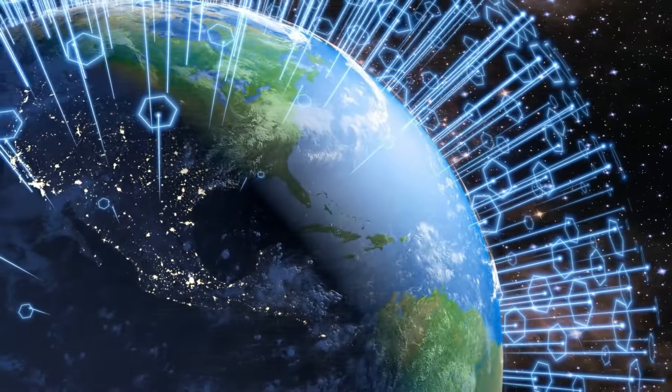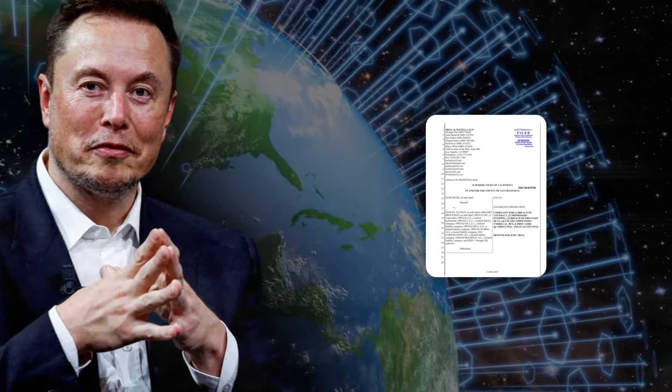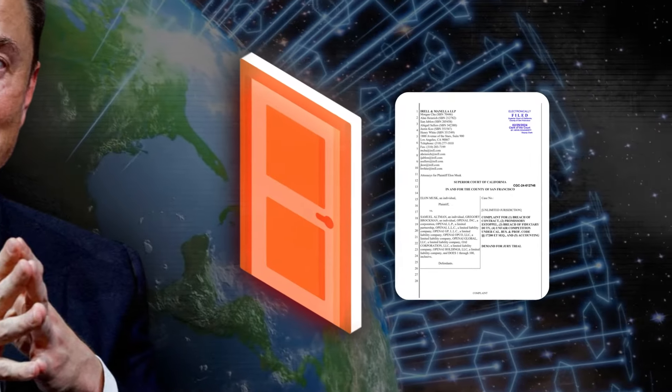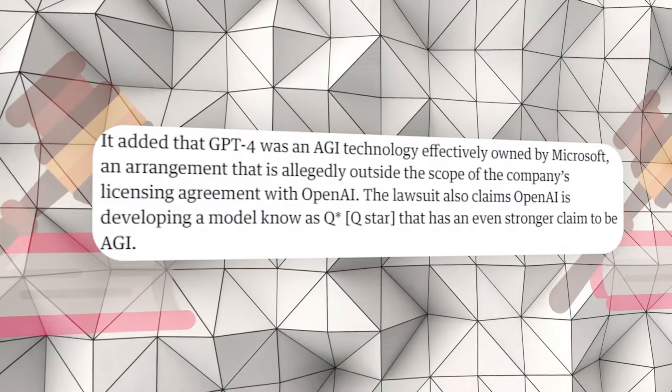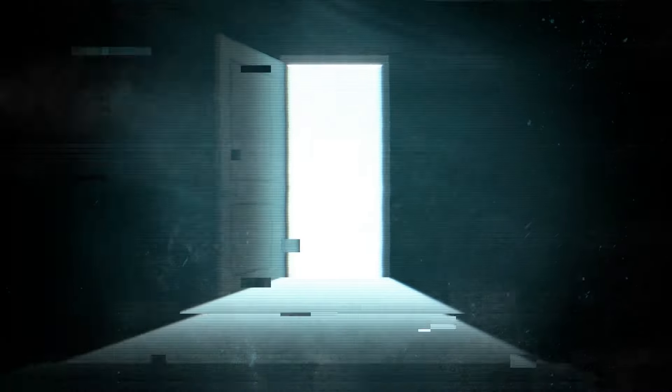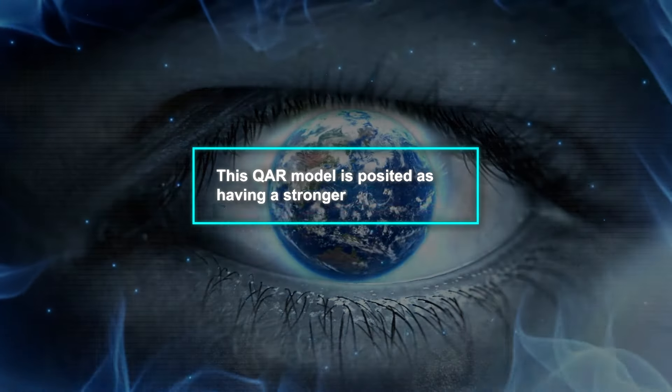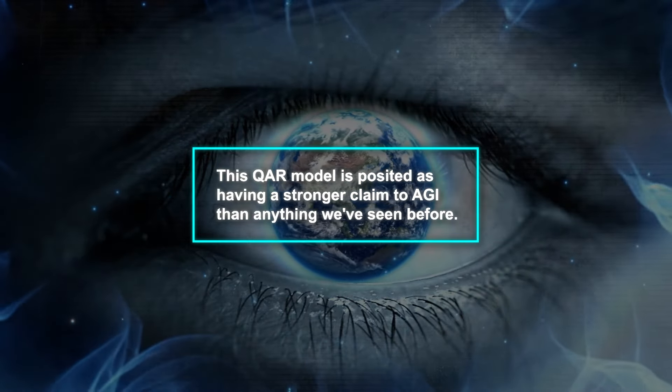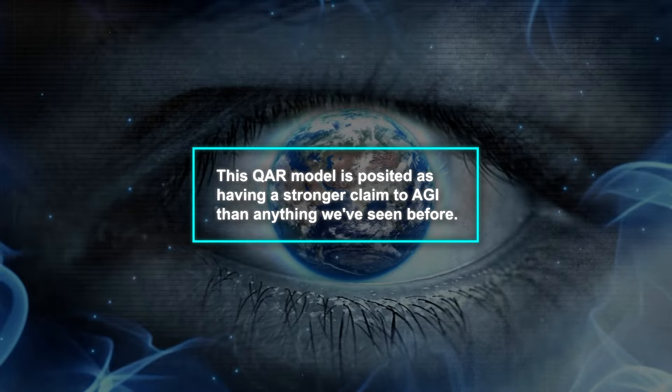And according to the ripples being sent across the tech world by Elon Musk's lawsuit, we're not just inching closer to AGI, we might already be standing at its doorstep. Central to Musk's argument is the mention of a model referred to as QAR. Now, the details are shrouded in a bit of mystery, but the implication is clear.